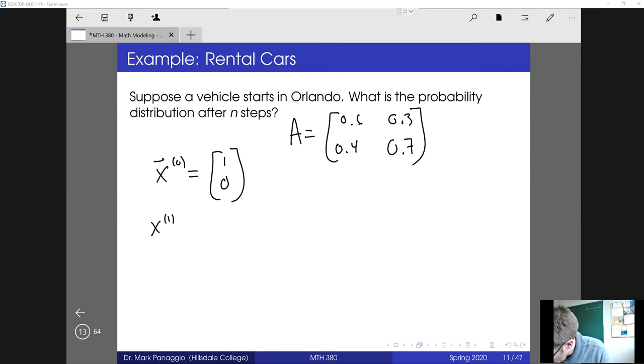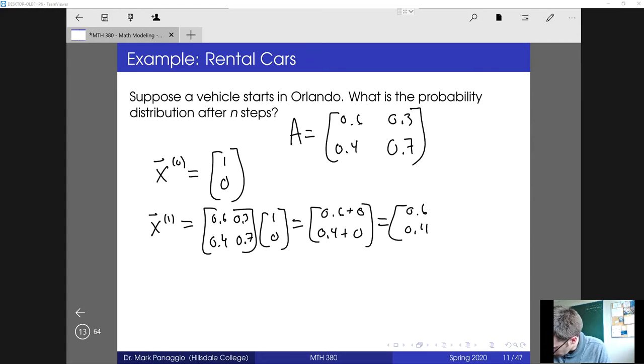And x1 is going to be the probability that I go from state 1 to state 1, so from Orlando to Orlando. And then the probability that I go from Orlando to Tampa, which is given by A times the initial state. And notice if we do our matrix multiplication, we'll get 0.60 and then 0.4 plus 0, which is 0.6, 0.4. So if the car starts in Orlando, there's a 60% chance that it stays in Orlando and a 40% chance that it goes to Tampa. That makes complete sense. But if I want to then find the solution at the next point in time, the power of the Markov chain is that I just need to multiply by the matrix again.